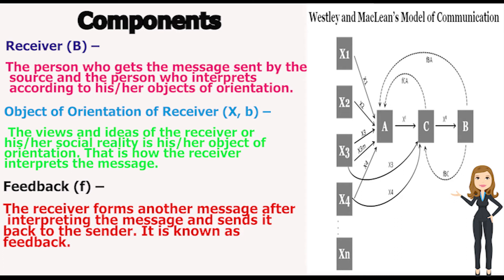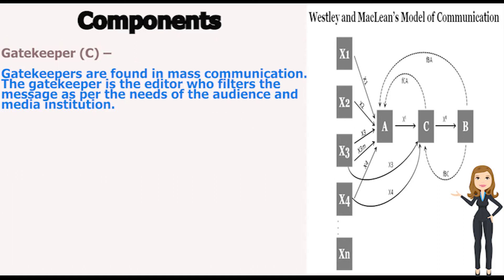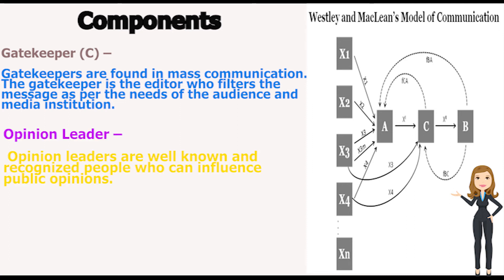F stands for feedback. In interpersonal communication, feedback is direct and fast, but in mass communication, feedback is slow and indirect. Feedback means the receiver forms another message after interpreting the message and sends it back to the sender. The next component is gatekeeper — C stands for gatekeeper. Gatekeepers are found in mass communication. The gatekeeper is the editor who filters the message as per the needs of the audience and media institutions. Opinion leaders are well-known and recognized people who can influence public opinion.